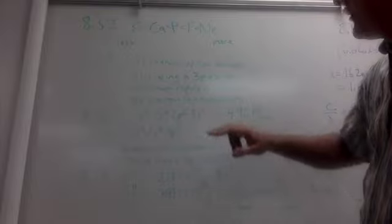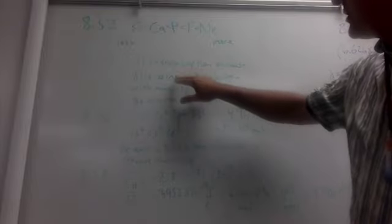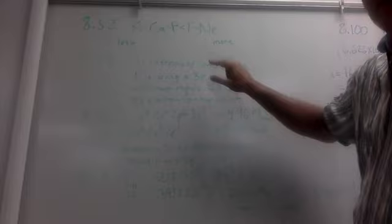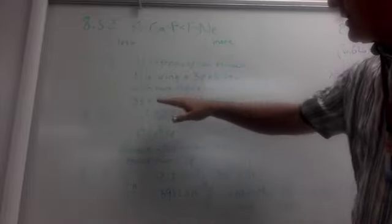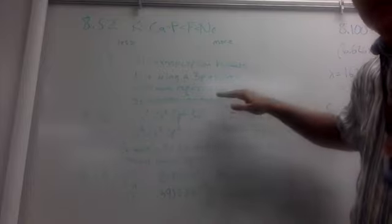And that is because aluminum is an exception because it's losing a 3p electron, which has higher energy and more repulsion than a 3s electron, which is the electron that magnesium is losing for its first ionization energy.